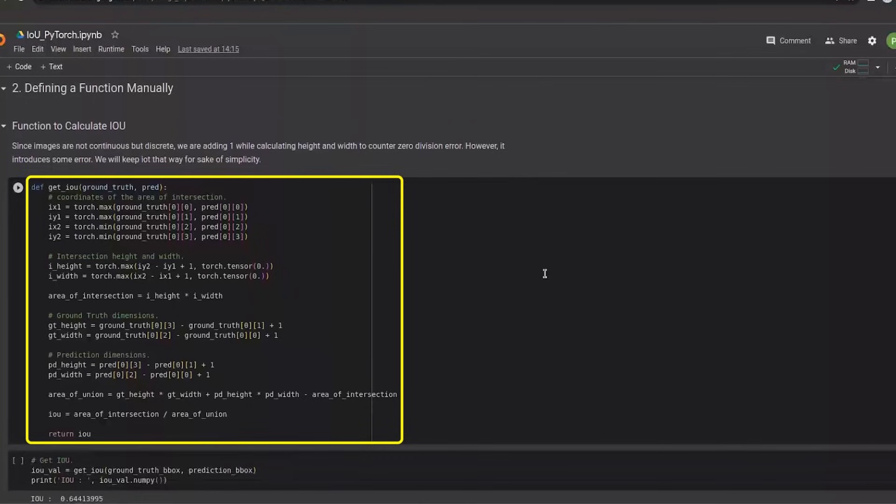The same concept has been applied using Python in the manual approach for IoU calculation shown on this Google Colab notebook.